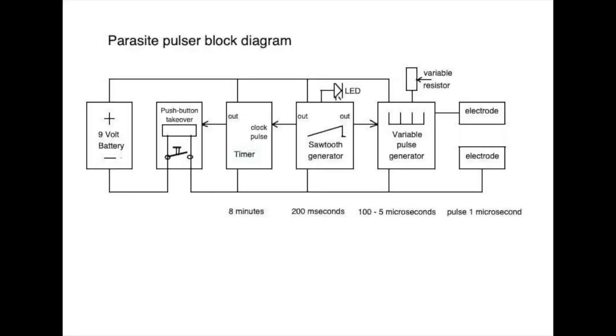A push at the button starts the pulser. The timer takes over. The sawtooth generator controls the sweep frequency of the pulse generator. A variable resistor determines the central frequency. This pulse is led to the electrodes.